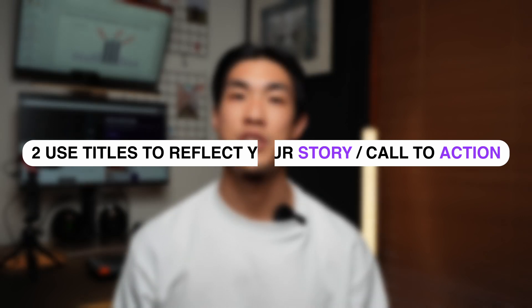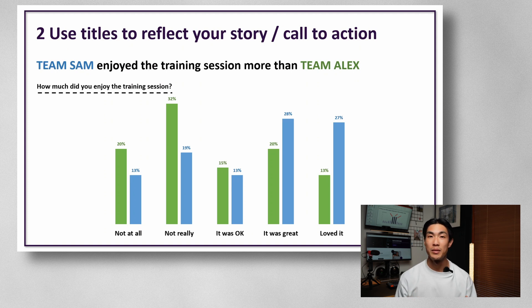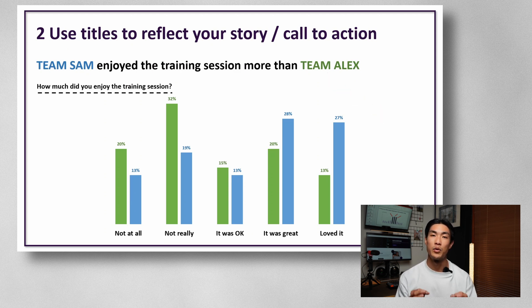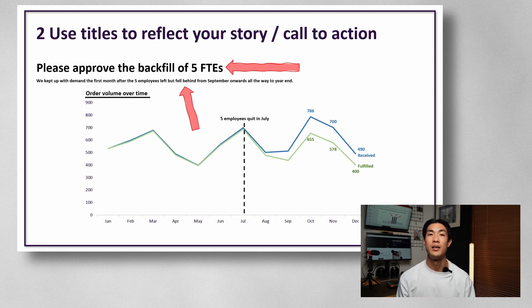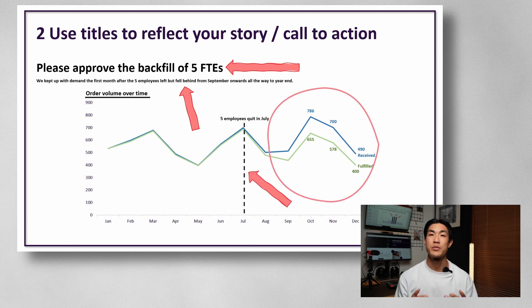Tip number two would be to use your titles to reflect your story or call to action. This chart compares how much two teams, Team Sam and Team Alex, enjoy the training session. Just by reading the title, your audience already knows exactly what to look for in the visual, which is the fact that Team Sam enjoy the training session more than Team Alex. Or here's another chart with a call to action clearly indicated in the title. The title also provides an explanation around why we should hire five FTEs to backfill the position, clearly supported by the visual, as we can see a gap opening up between orders received and orders fulfilled after the resignations.